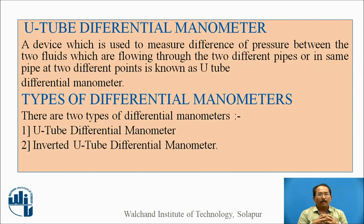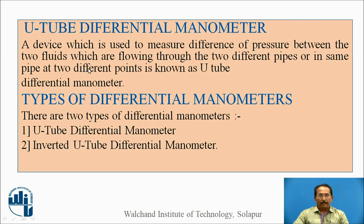We will see what is a U-tube differential manometer. It is a device which is used to measure the difference of pressure between two fluids which are flowing through two different pipes or in the same pipe at different points, which is known as a U-tube differential manometer.